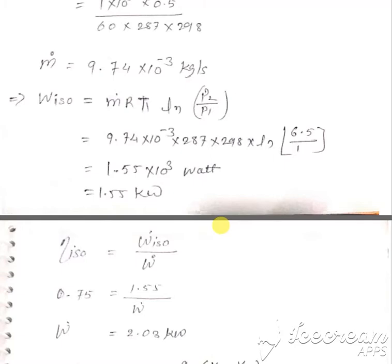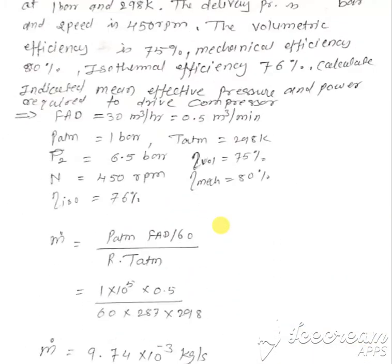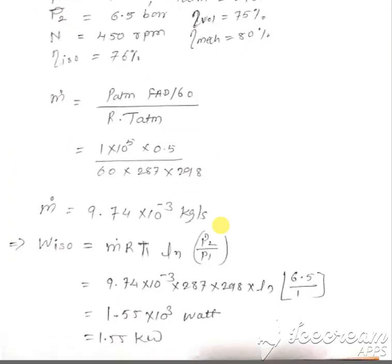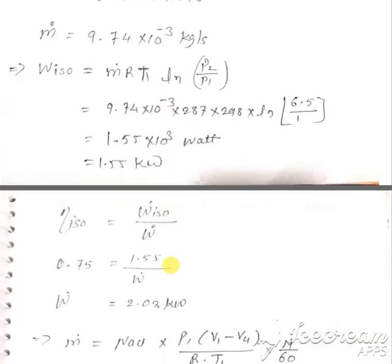In this problem, isothermal efficiency is given, but the value of small n — the index of compression and expansion — is not given. Therefore, we cannot use W-dot = n/(n−1) × M × R × T1 × [(P2/P1)^((n−1)/n) − 1]. Instead, since isothermal efficiency = W_iso / W_poly, we calculate isothermal power: W-dot_iso = M-dot × R × T1 × ln(P2/P1). Then, from isothermal efficiency = W_iso / W-dot, we calculate W-dot, the polytropic power.